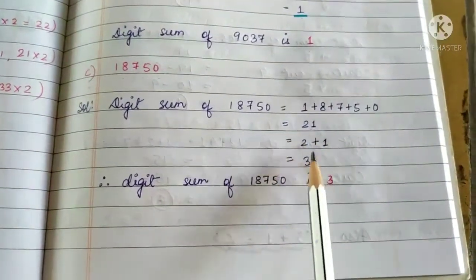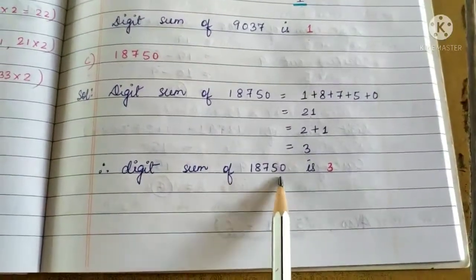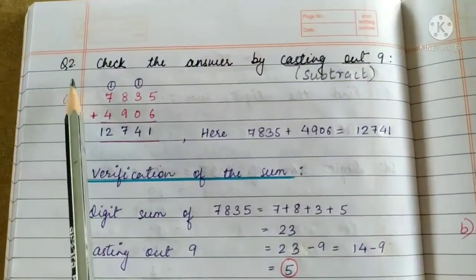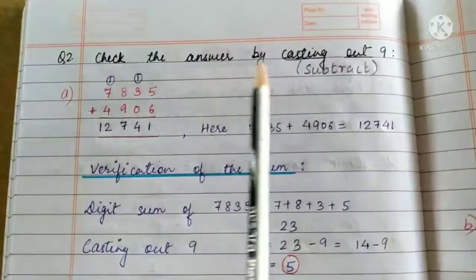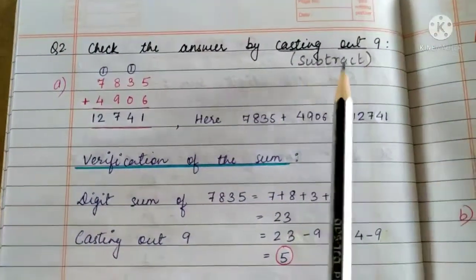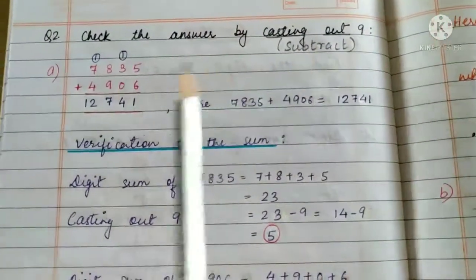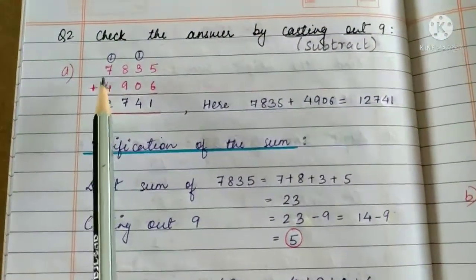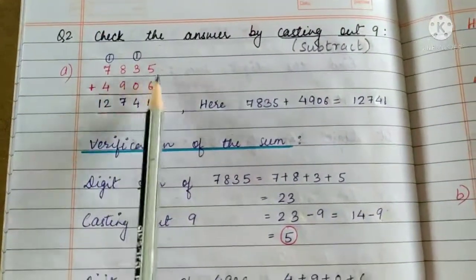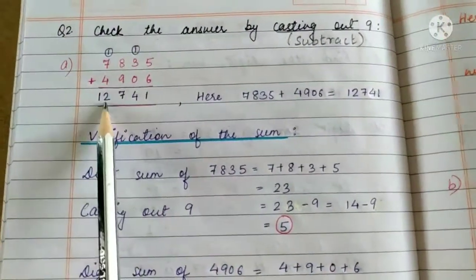Therefore, the digit sum of 18750 is 3. Children, the next question is very interesting. We have to check the answer by casting out 9. Casting out 9 means to subtract—cast out means to remove, that is subtract. Here we have the question of addition: the addends are 7835 + 4906, the sum is 12741.